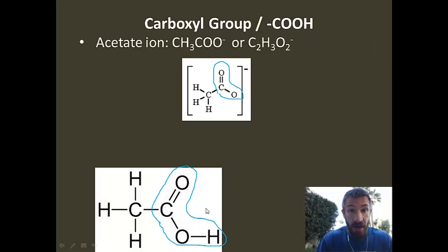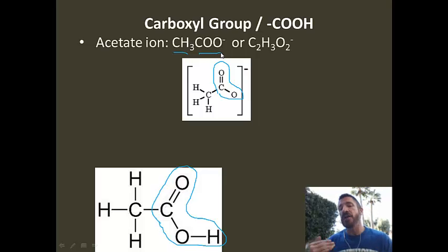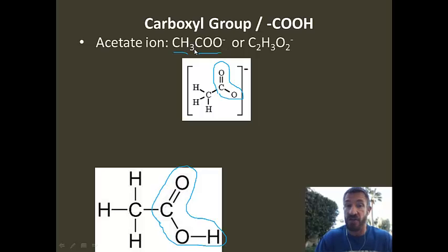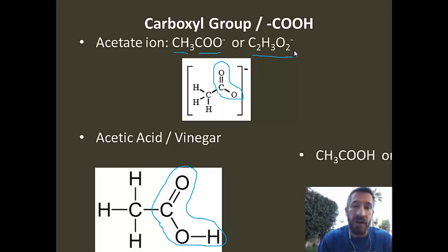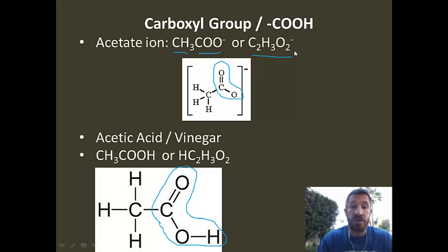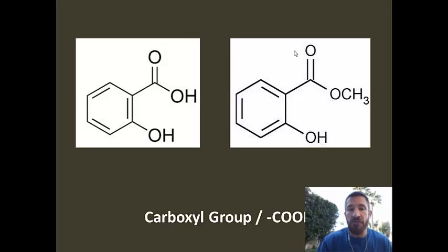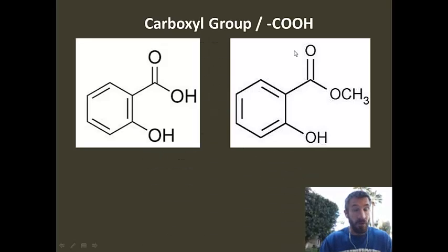At the top we have the acetate ion. Notice there are two ways to write that: CH3COOH, where a carbon is bonded to three hydrogens, which is bonded to a carbon with two oxygens attached; or we condense all those and say C2H3O2 with a negative charge. When we add a hydrogen to that, we have acetic acid or vinegar, written as CH3COOH or HC2H3O2. Now let's look at both structures — one contains a carboxylic group (COOH) and is a carboxylic acid; the other is not. Hopefully you selected the first molecule.